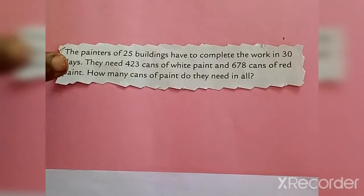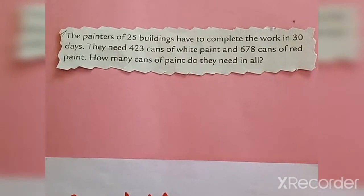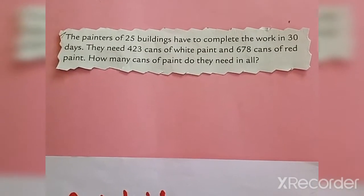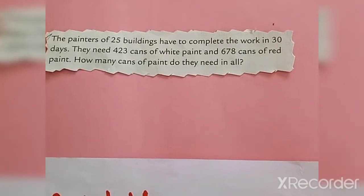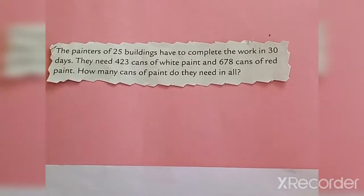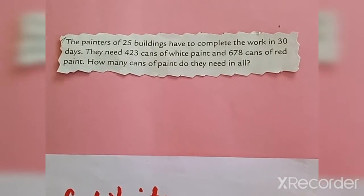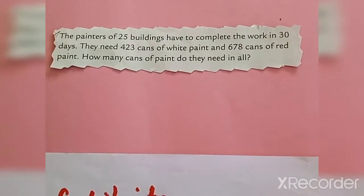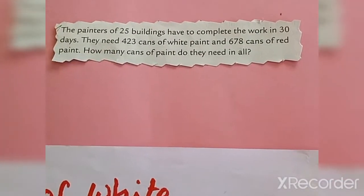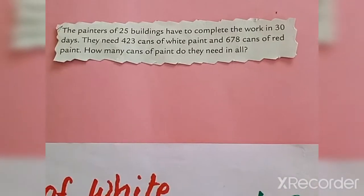Let us see one more example. The question is: painters of 25 buildings have to complete the work in 30 days. They need 423 cans of white paint and 678 cans of red paint. How many cans of paint do they need in all? When you analyze this question, you can see there are two pieces of extra information that we do not need — 25 buildings and 30 days — to solve this problem. We need only the number of white and red cans.